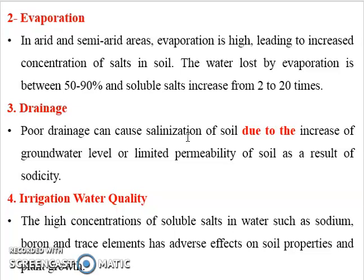The fourth important cause of soil salinity is the application of saline irrigation water. The high concentration of soluble salts in water — such as sodium, boron, and other elements — has an adverse effect on soil properties and plant growth. If you apply bad water, you will deteriorate your soil. Consequently, if you add saline water in irrigation, the salt will accumulate in the soil and the soil will be deteriorated.